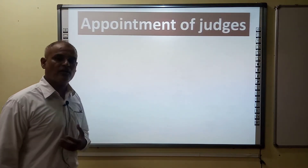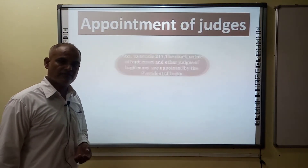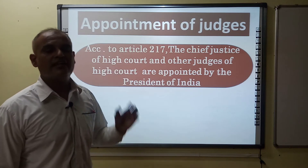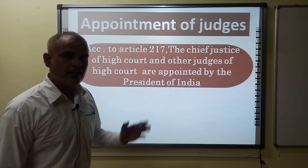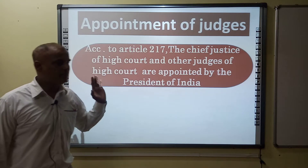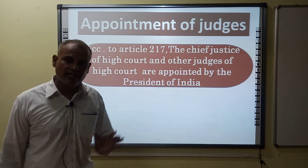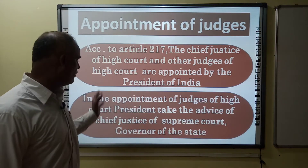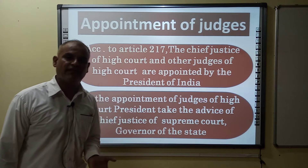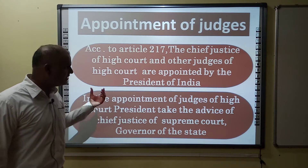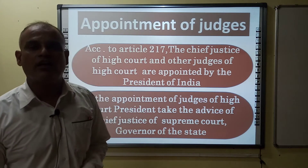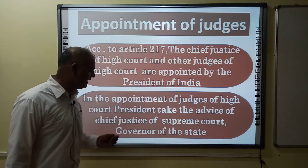Now, the appointment of judges. According to Article 217, the Chief Justice of the High Court and other judges of the High Court are appointed by the President of India. For the appointment of judges of a High Court, the President can take the advice of the Chief Justice of the Supreme Court and the Governor of the respective state.